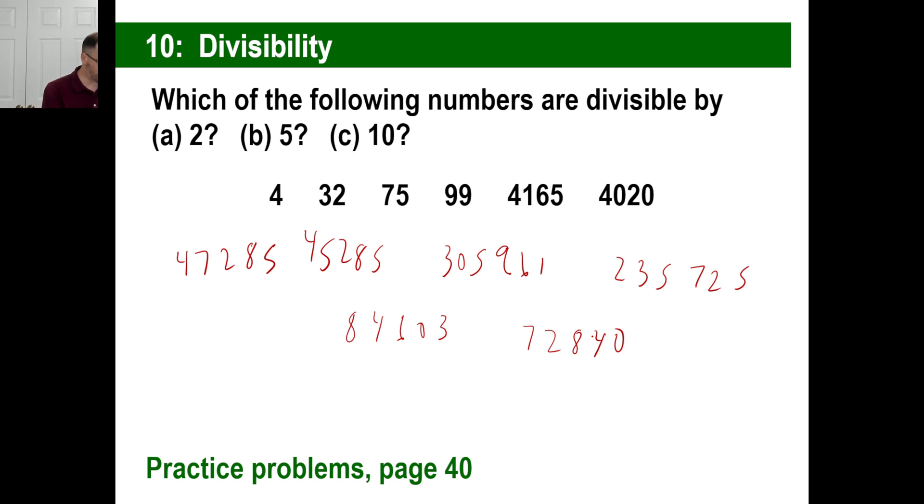Which are divisible by 3, 5, and 10. I'm going to kind of like do this. 3, 5, and 10. And then none of these. Let's do 10 first. The only one that's divisible by 10, obviously, is this one. Because it ends in a 0.